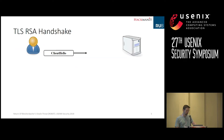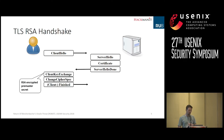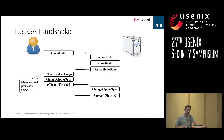Imagine we have a client who wants to communicate with a TLS server. First, he sends a client hello message, saying something like: I want to communicate with you with this TLS version, cipher suites, extensions, and so on. The server responds with a server hello message with the certificate, which contains the public key of the server, and a server hello done message. The client then encrypts an RSA pre-master secret using the server's public key and sends it to the server. Afterwards, the client sends change cipher spec and finished messages to authenticate itself. The server accepts the client key exchange message, decrypts the pre-master secret, and authenticates itself with the finished message.